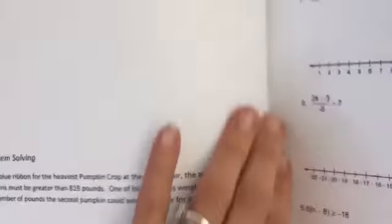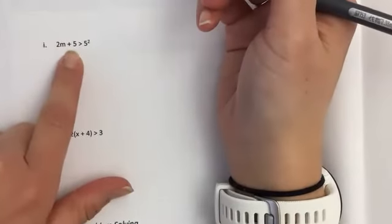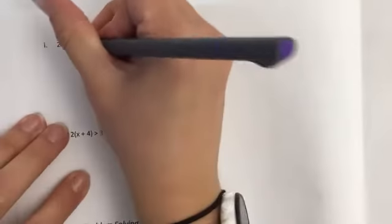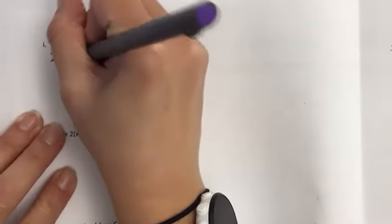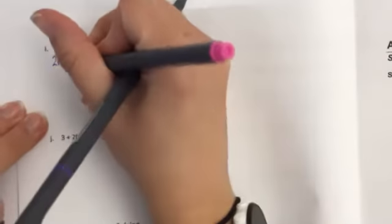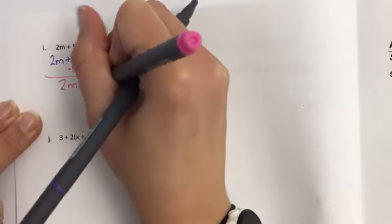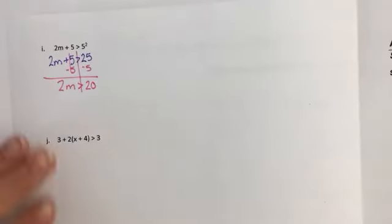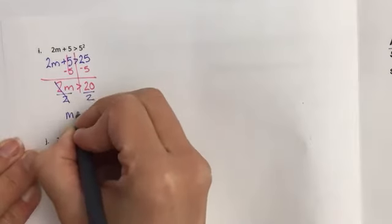Just a couple more. On this particular problem, what can you simplify before solving? The 2M plus 5, there's nothing you can do, but the 5 squared can be written as 25. Then we will go about solving it. The first thing I would do is subtract the 5 from both sides. 2M is greater than 20. Divide both sides by a 2. M is greater than 10.